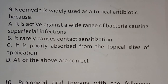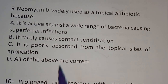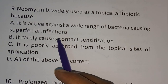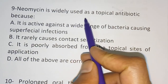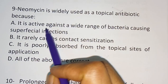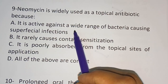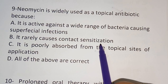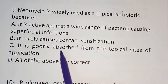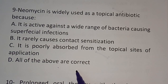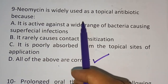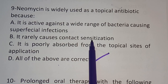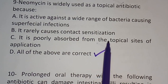Question 9: Neomycin is widely used as a topical antibiotic because — Option A: it is active against a wide range of bacteria causing superficial infections; Option B: it rarely causes contact sensitization; Option C: it is poorly absorbed from the topical site of application; Option D: all of the above are correct. The correct answer is Option D — all of the above are correct.